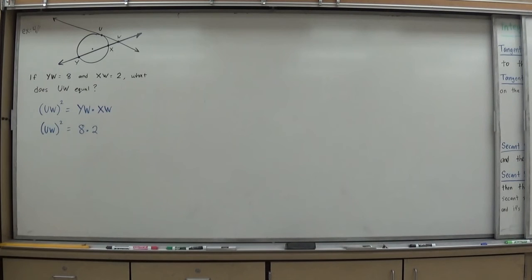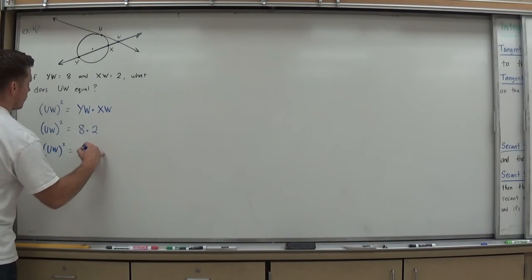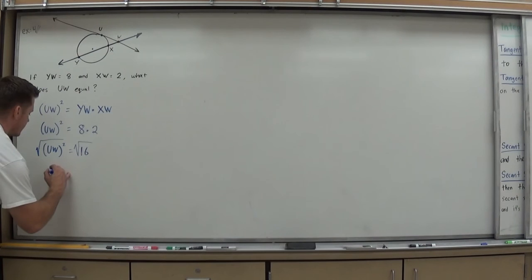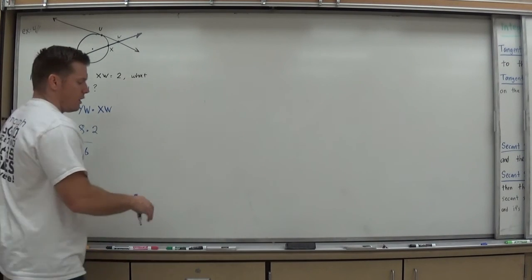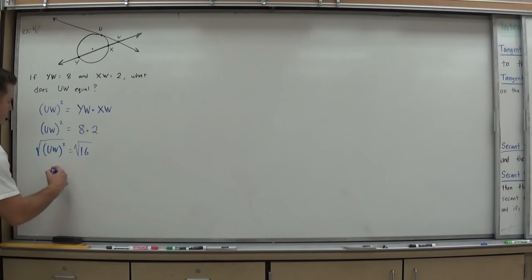So I now know that UW squared equals 8 times 2, which means UW squared equals 16. Which means UW has to be a number that when squared is 16. But we have dealt with some of these equations previously. We know we can solve or undo a square operation by doing its inverse, a square root. So UW must be the square root of 16, which is 4. And so that must be the length of that tangent segment UW.